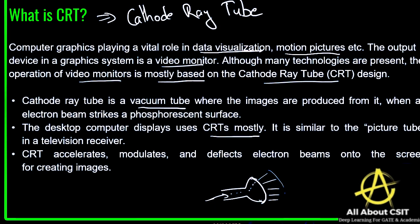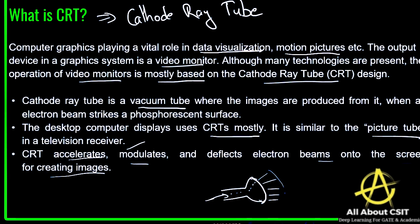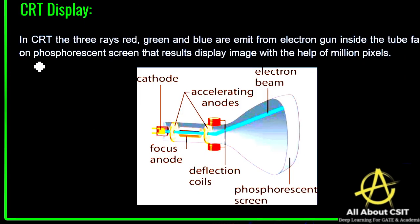Desktop computers mostly use CRTs. It is similar to the picture tube in a television receiver — in televisions, a picture tube allows you to see multiple colors on the screen, and this picture tube is made of CRT. The CRT accelerates, modulates, and deflects the electron beams onto the screen to create an image. If you observe the picture, the CRT looks like a vacuum tube.